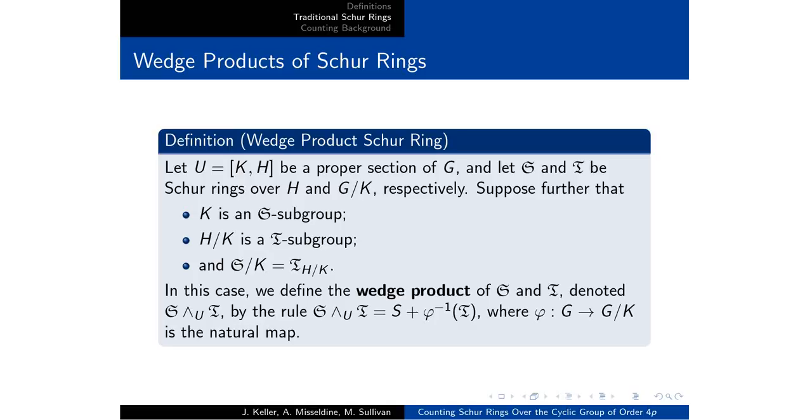Speaking of, a wedge product Schur ring is going to be constructed in the following way. If you have a proper section of your group and you have Schur rings over H and G mod K respectively, as well as those three qualities being satisfied, then by taking the inverse map of the classes of T and adding them with S, we will construct our wedge product Schur ring.